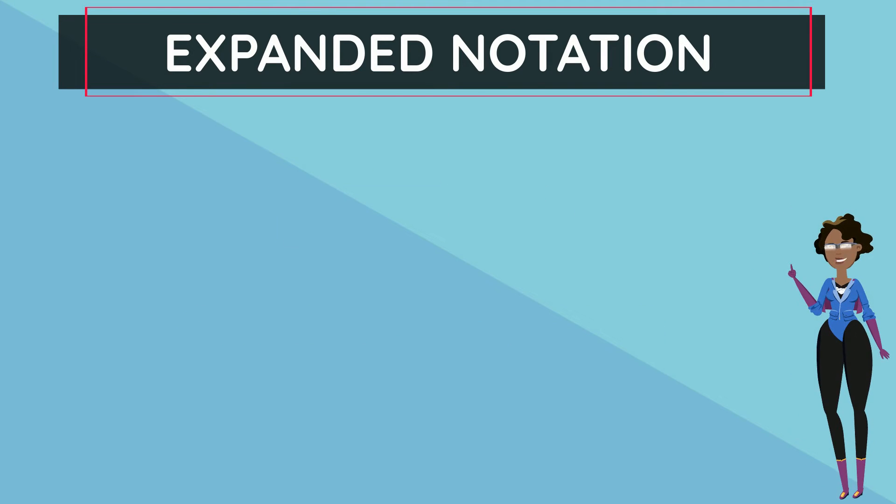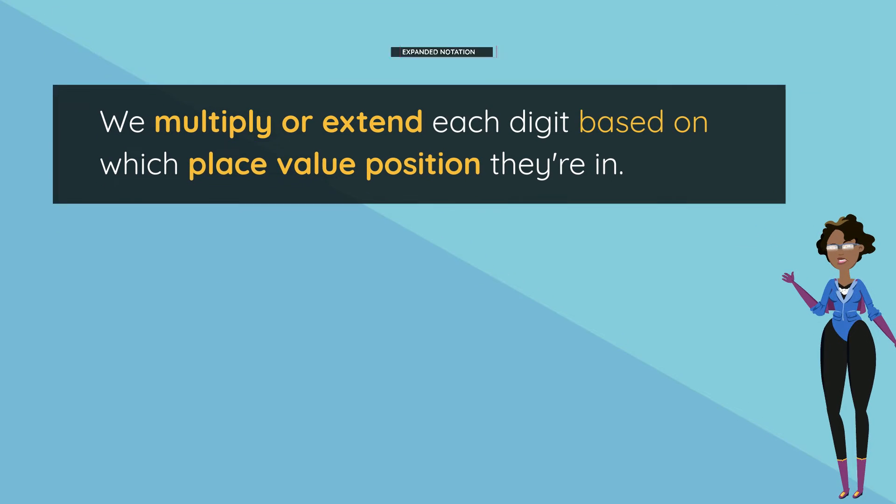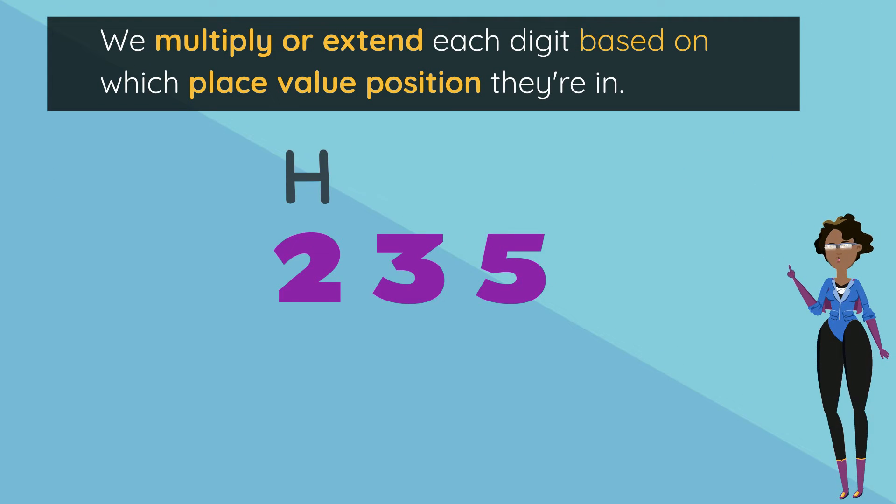Now we're going to break it down. We multiply or extend each digit based on which place value position they're in. 2 is in the hundreds place or position so it is 2 multiplied by 100. That's how we get 200.